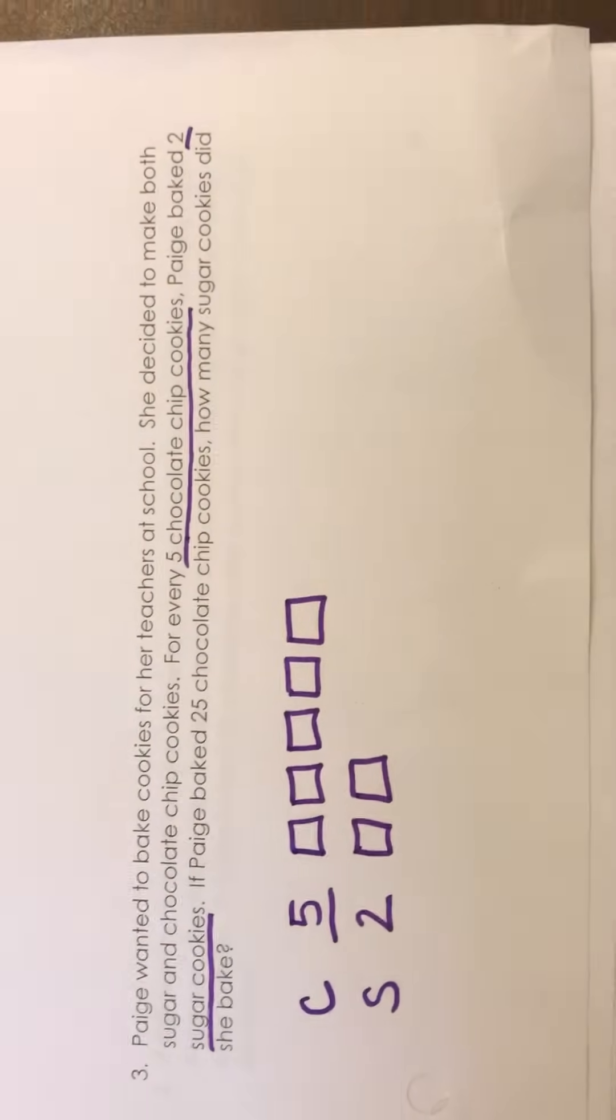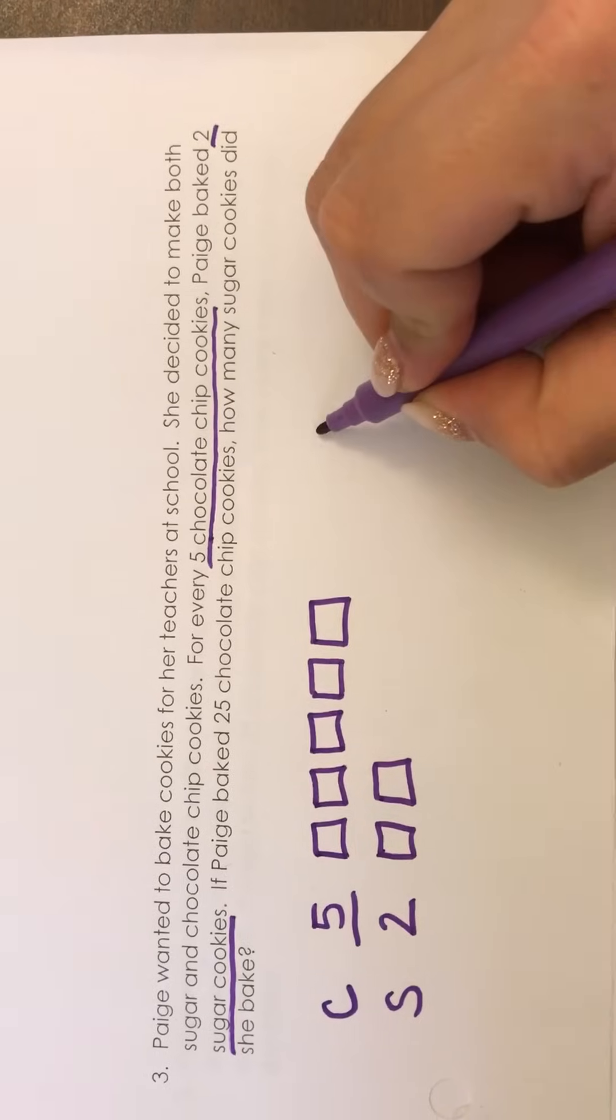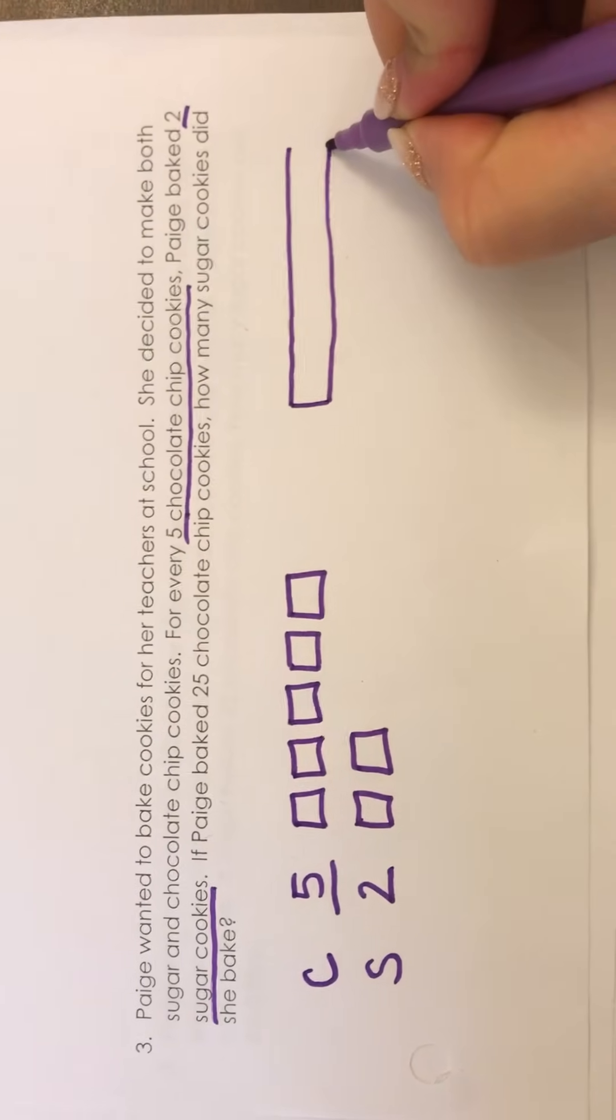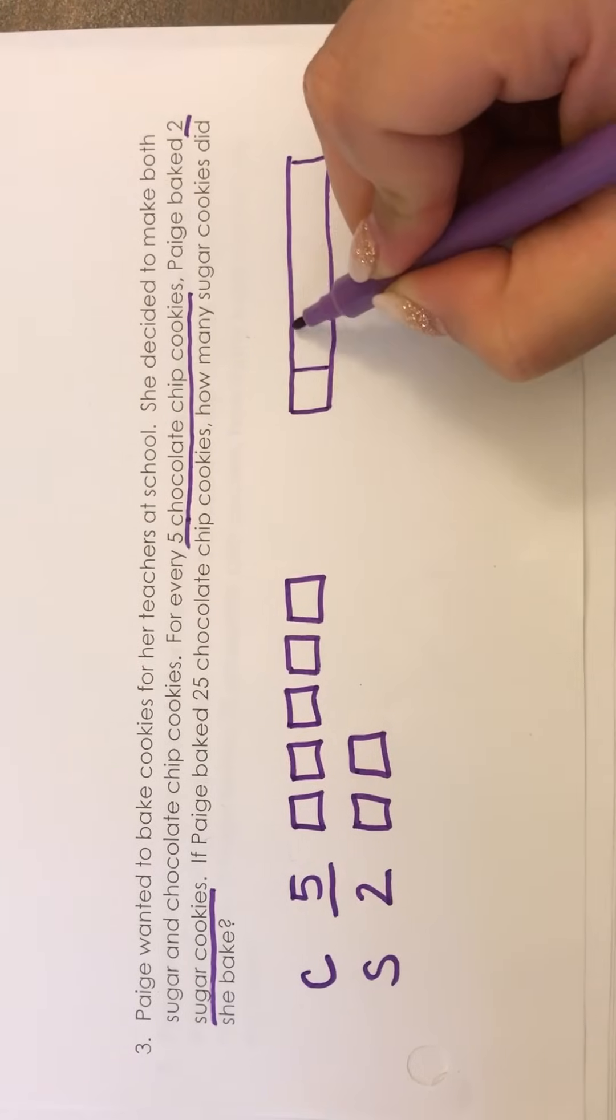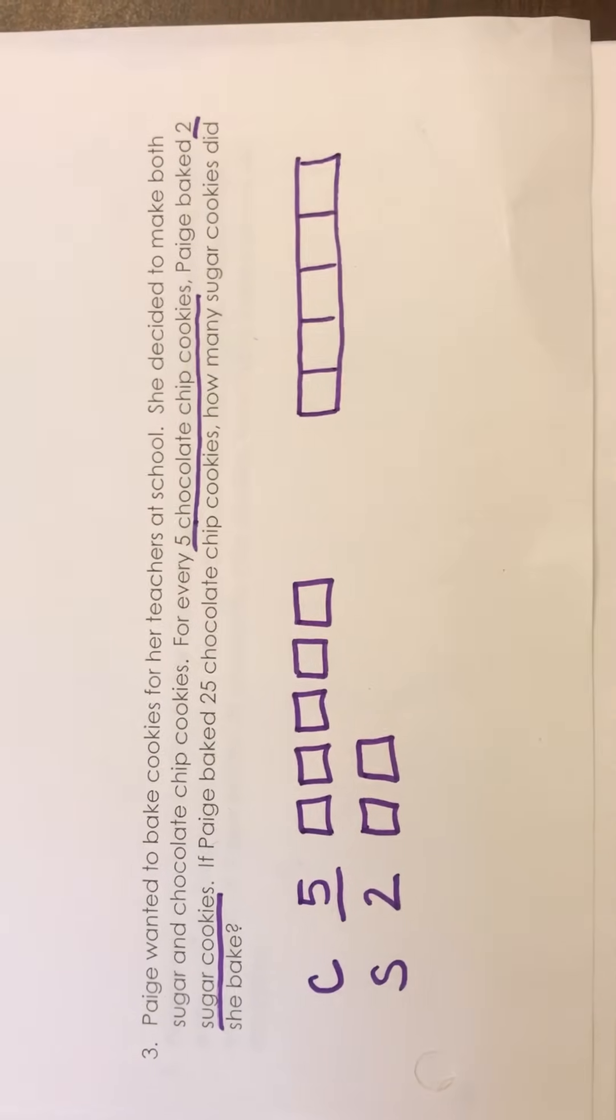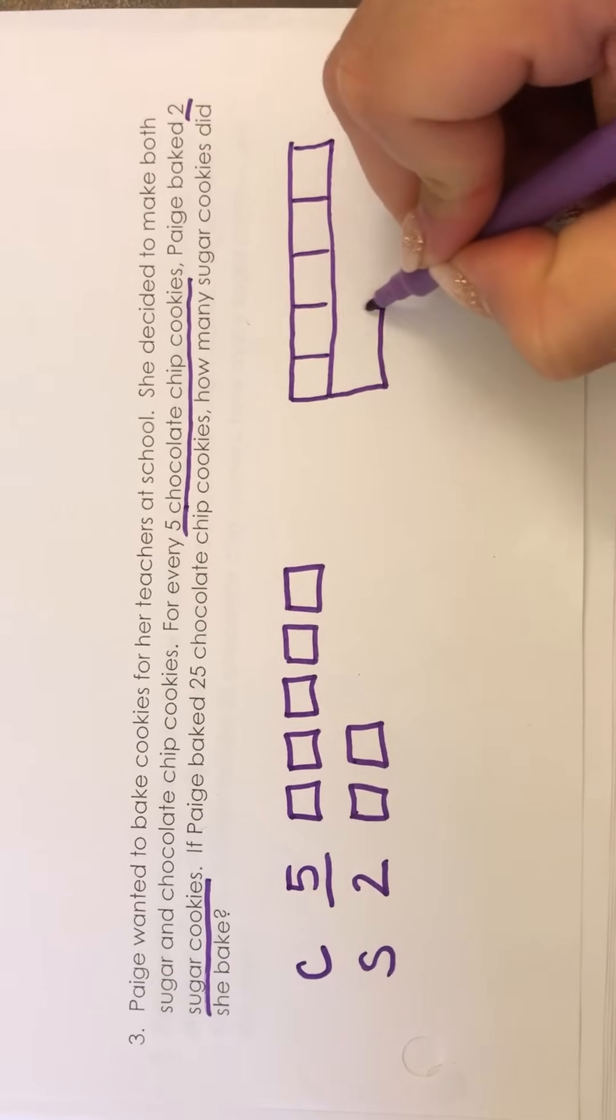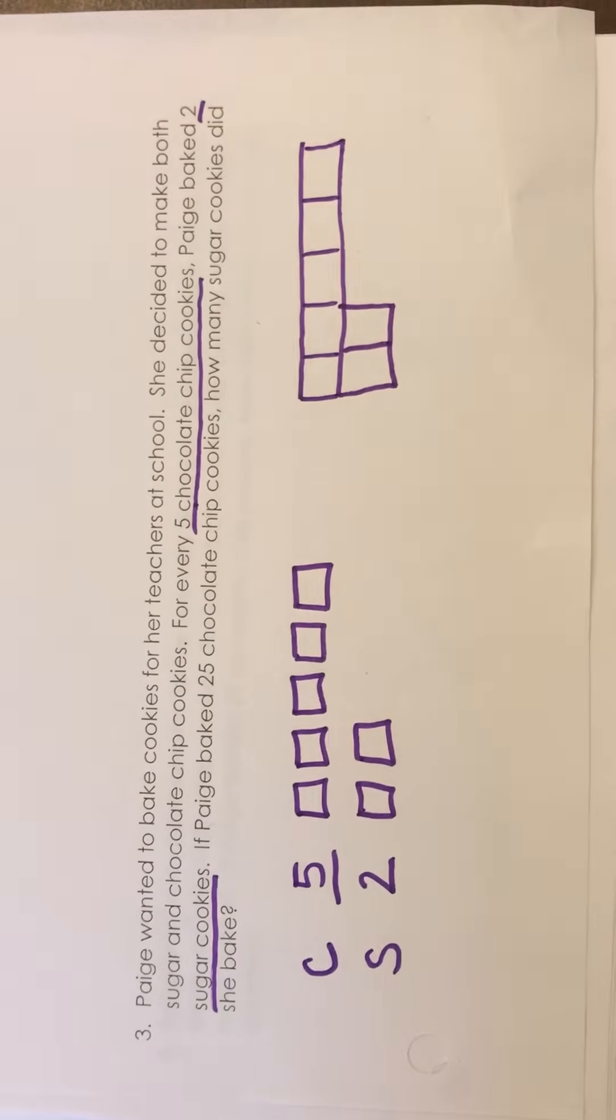Now if you wanted to do your boxes connected I'm going to show you right here. All you have to do is do a long rectangle and split it up. One, two, three, four, five. And then for two you can connect them underneath and just go one, two.